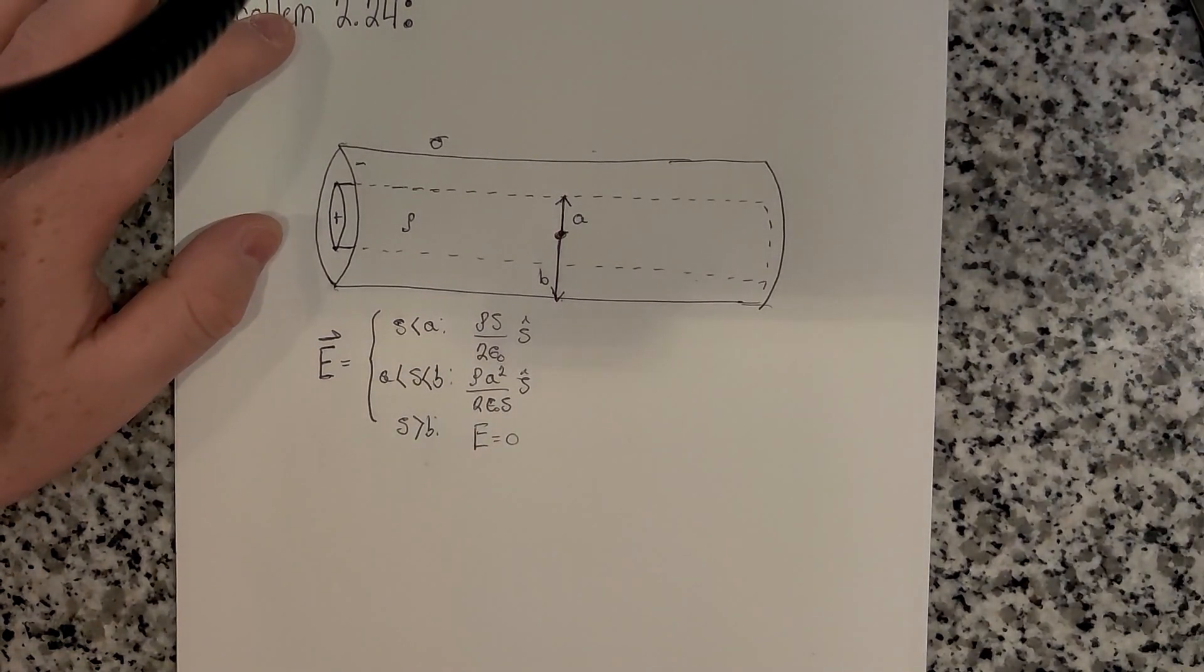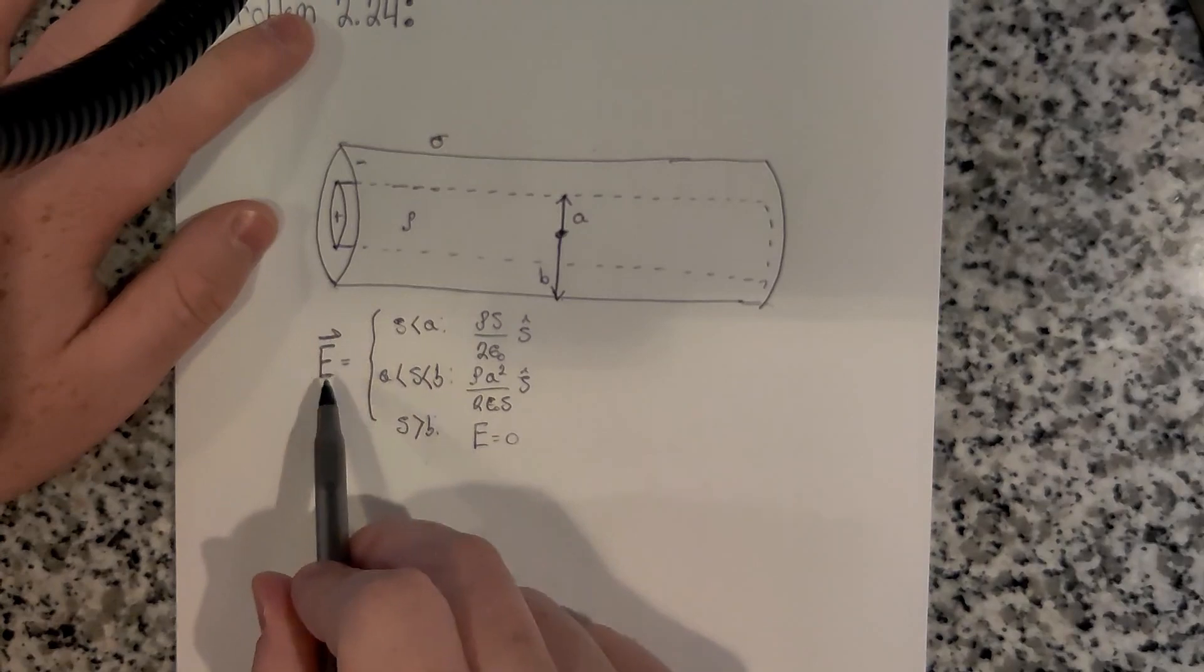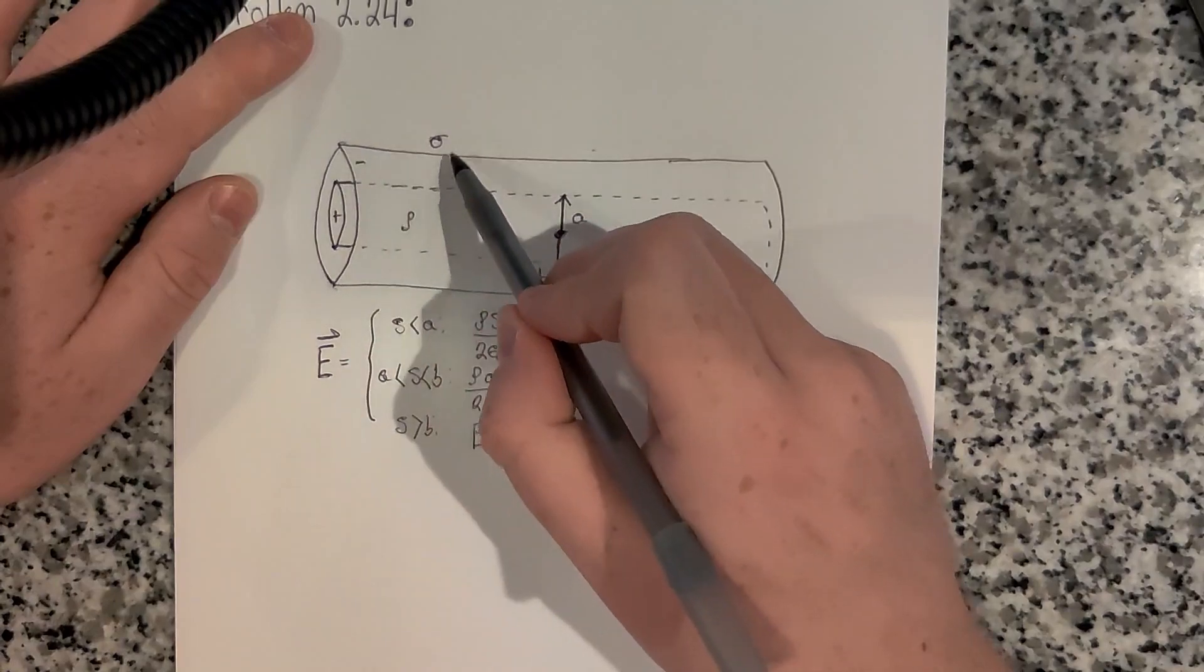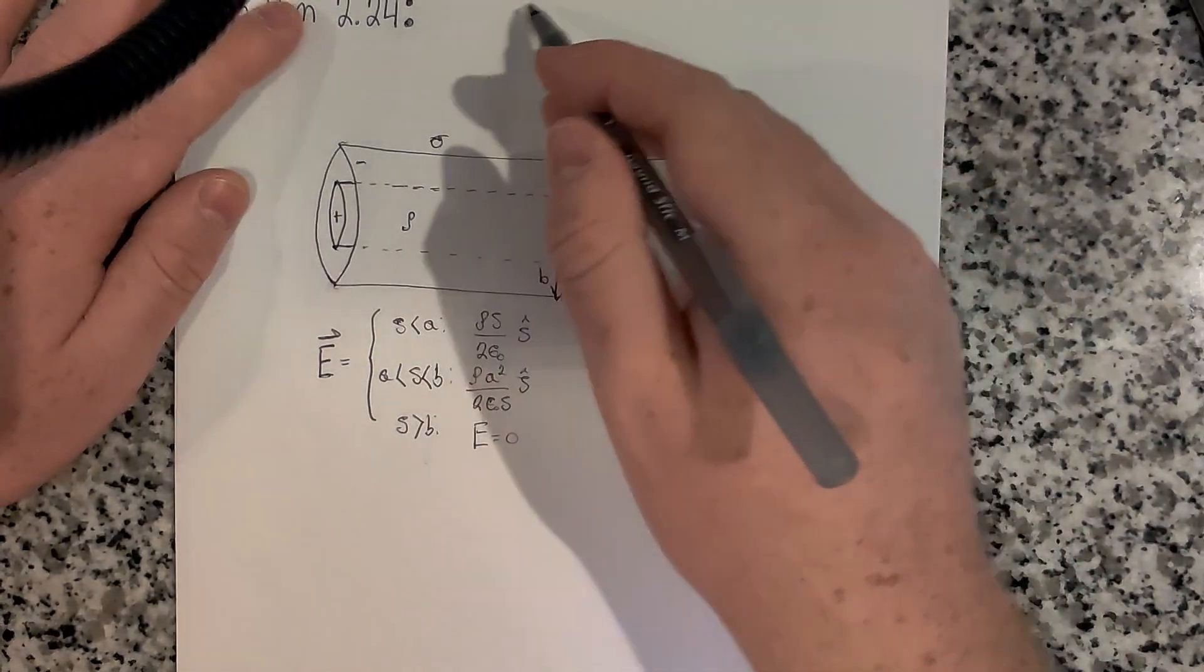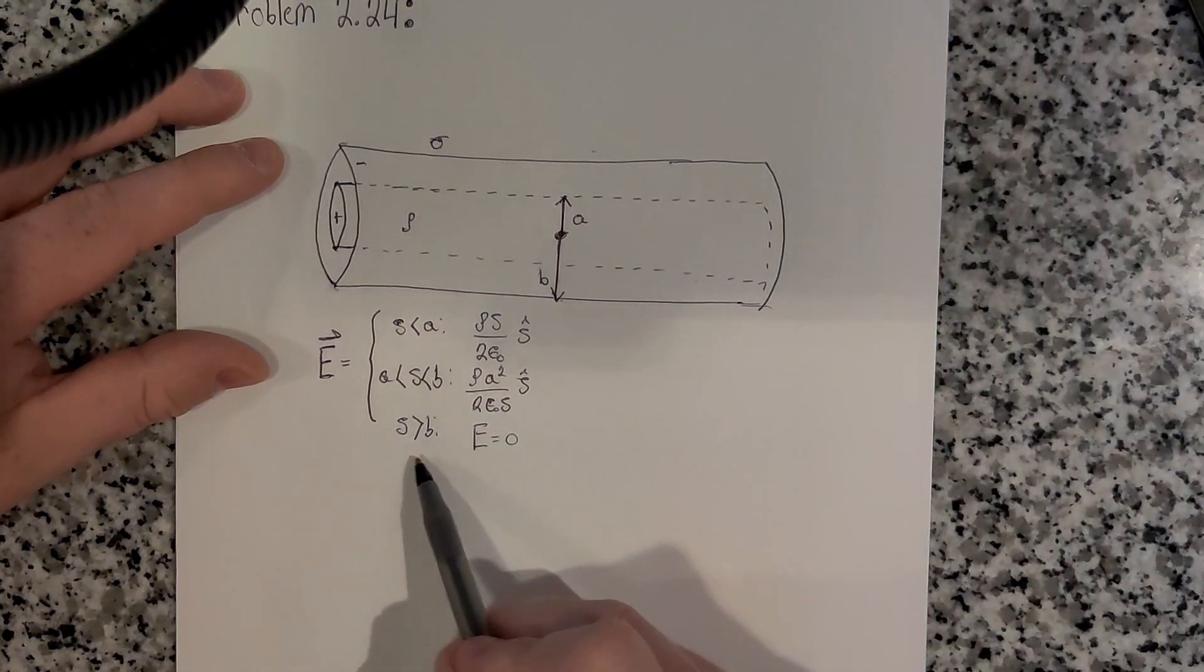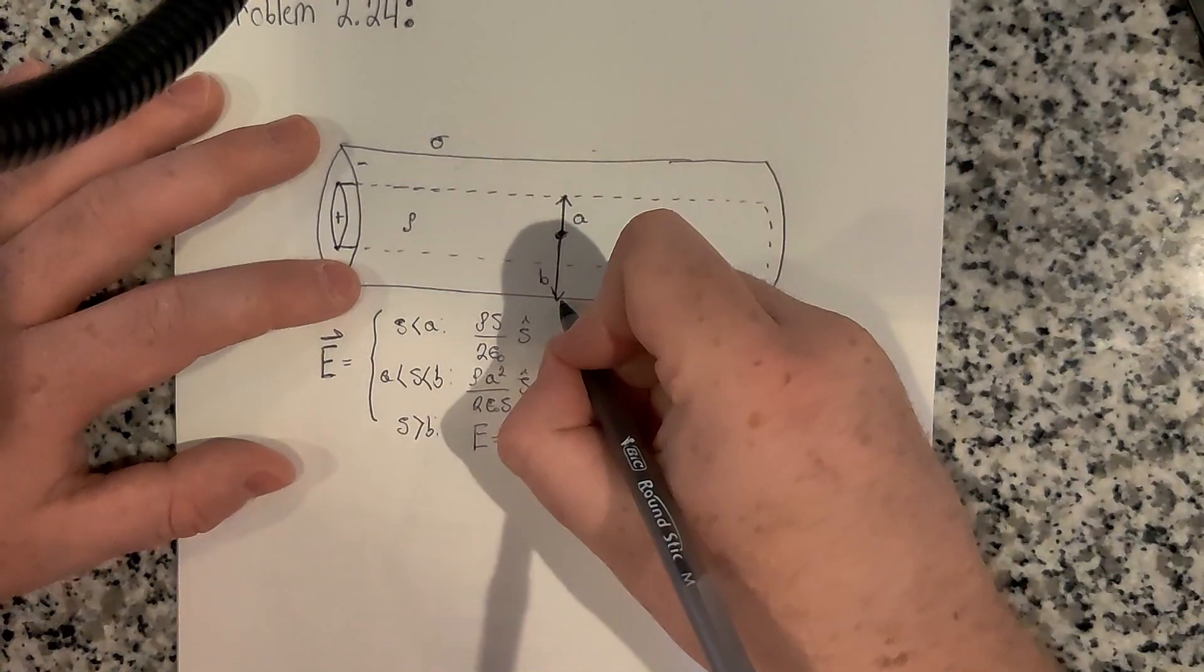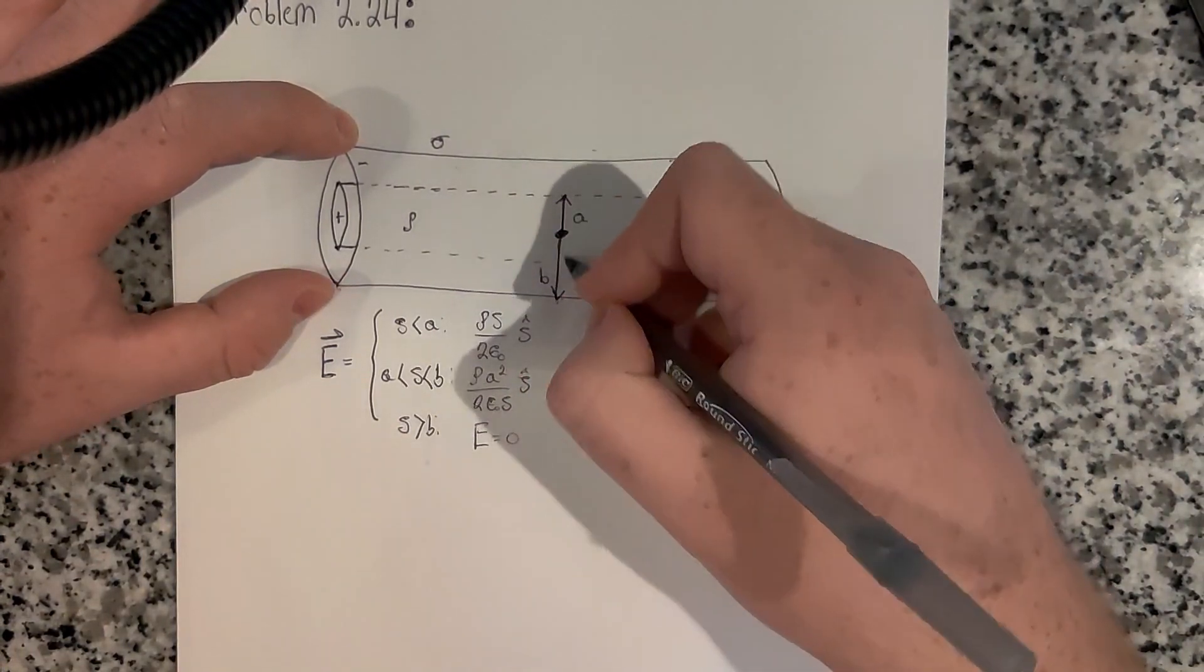Alright, so this problem states that this is the charge configuration we had in problem 2.16. I have already solved this problem and have the electric fields written for each of the regions. We have an outer cylinder and inner cylinder. The inner cylinder has a uniform volume charge density, and the outer cylinder surface has a uniform surface charge density. These two charge densities cancel each other out such that if you're outside of the whole configuration, it looks electrically neutral, and that's why the electric field outside is zero. We want to find the potential difference between a point on the outer cylinder and the center here on the axis.